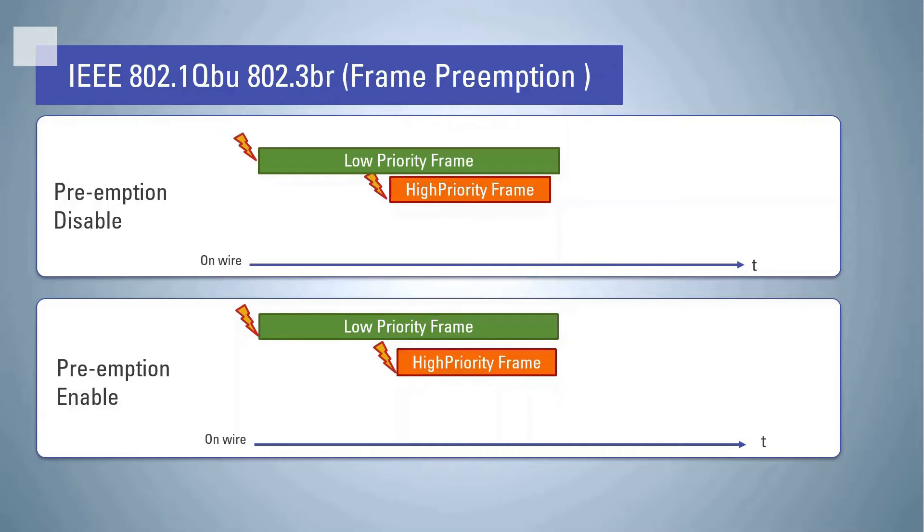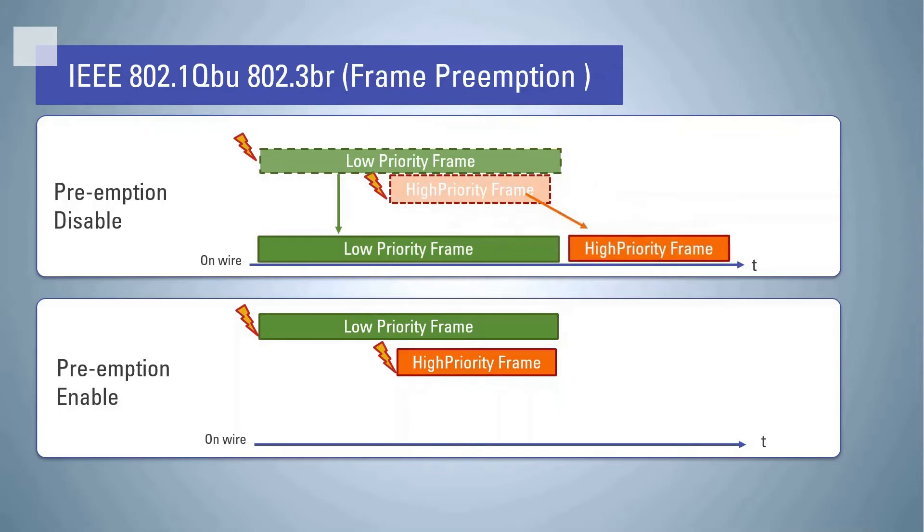Let's take a brief look at the preemption. For Ethernet devices that do not have the preemption function, it is not possible to send high-priority frames while sending low-priority frames. Therefore, such a delay occurs and real-time processing cannot be performed.